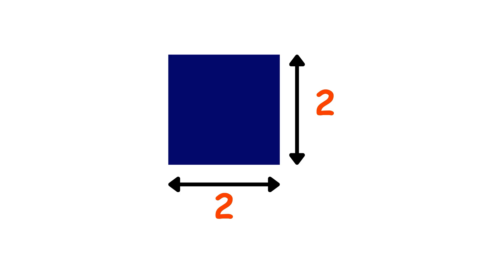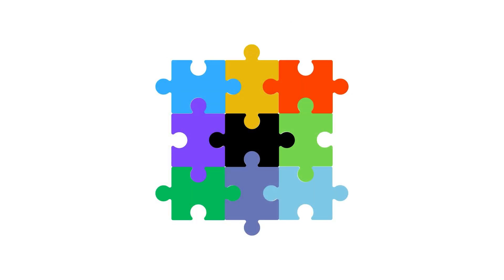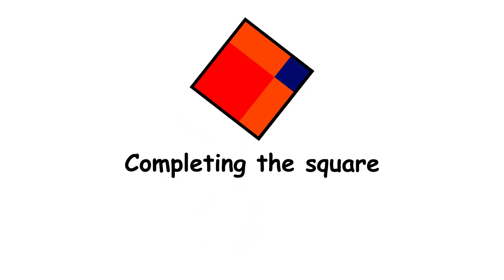This gives us an overall shape with an area of x squared plus 4x. Remember, this area has to be equal to 21. Now, this shape almost looks like a square. However, there is a little missing part in the bottom right corner. This missing part has a width of 2 and a height of 2. So, it's a smaller square with an area of 4. Adding in this missing part, the overall shape is finally one big square. This is called completing the square.